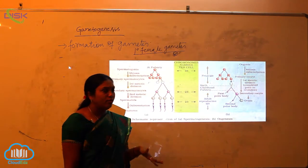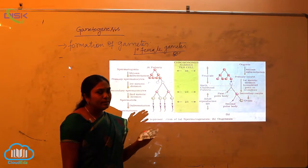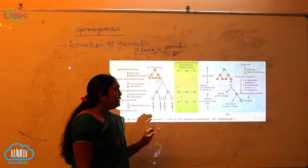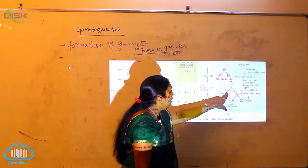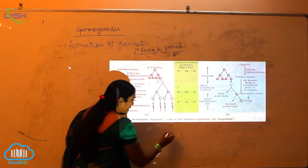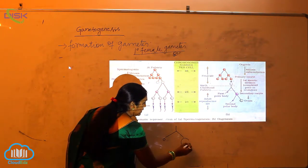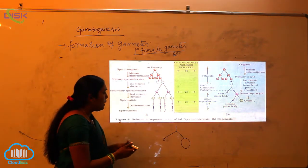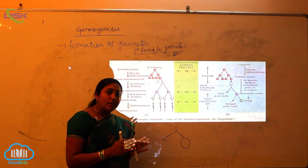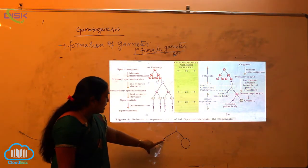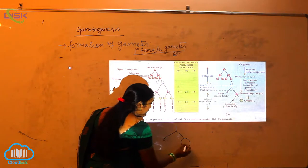After the primary oocytes are formed, the meiotic division will take place with different cell stages resulting in the formation of secondary oocytes. The secondary oocytes will leave a small polar body. A small polar body is present and a big secondary oocyte is present. The nuclear division will be equal. In the first polar body, you can see the same content of nucleus, same size as that of the secondary oocyte.